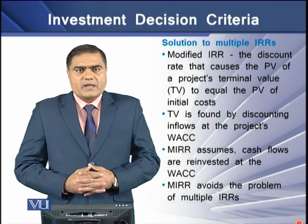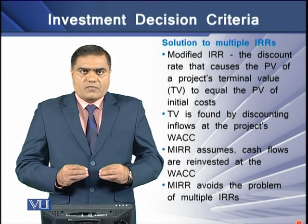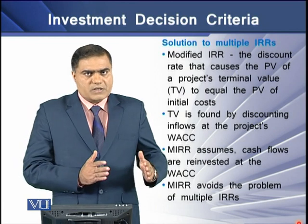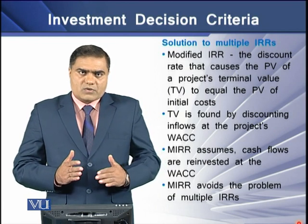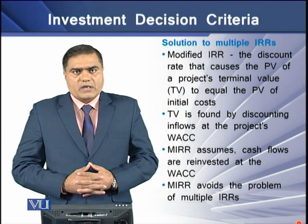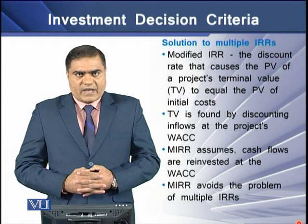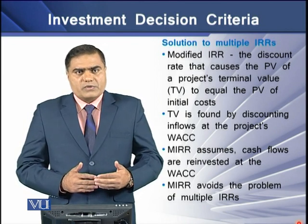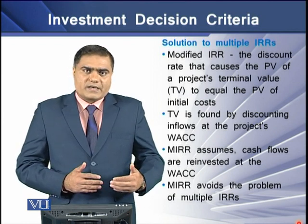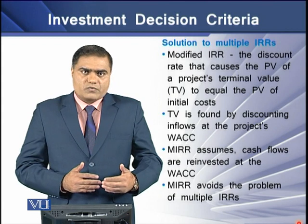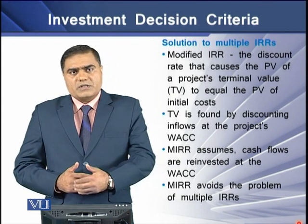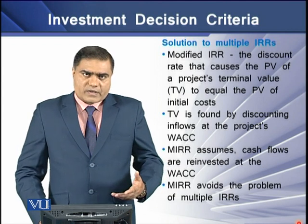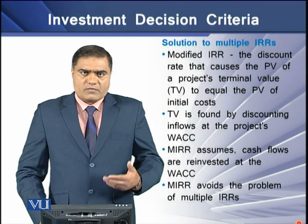In other words, we compute the terminal value of all the project's cash inflows and equalize this value with the initial cash outflow. To compute the terminal value, we use the WACC — the weighted average cost of capital — as the reinvestment rate for future cash flows. We then use the Modified IRR rate to equate the discounted terminal value with the initial cash outflow, thereby avoiding the problem of multiple IRRs.